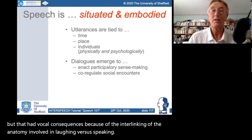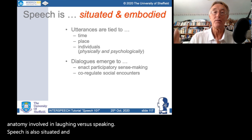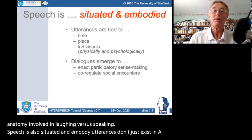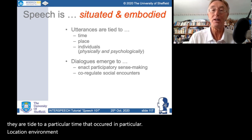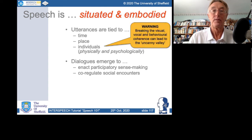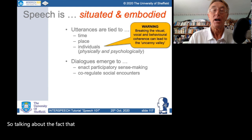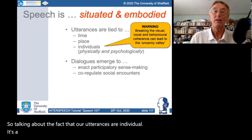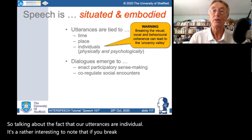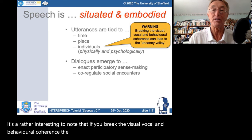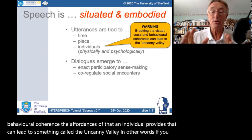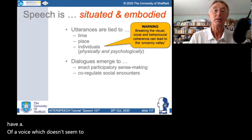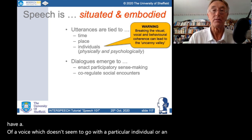Speech is also situated and embodied. Utterances don't just exist in a vacuum — they are tied to a particular time, location and environment, and to individuals both physically and psychologically. Interestingly, if you break the visual, vocal and behavioural coherence — the affordances an individual provides — that can lead to something called the uncanny valley: if you have a voice which doesn't seem to go with a particular individual or artefact, that can cause problems.